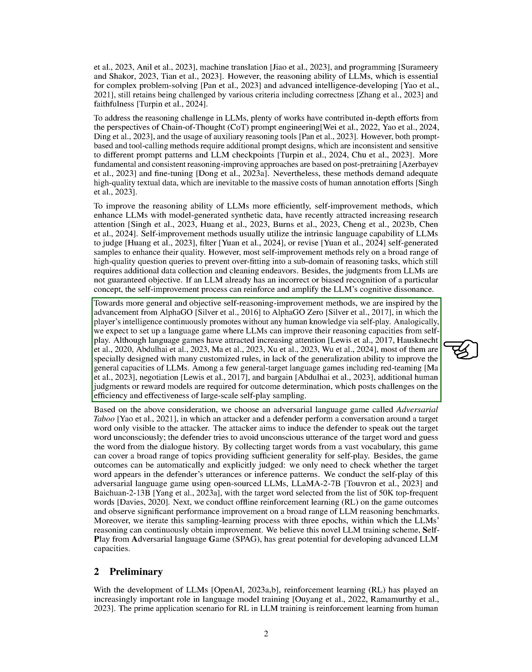To address these issues, we propose a self-reasoning improvement method inspired by AlphaGo Zero, where LLMs can enhance their reasoning through self-play. We introduce an adversarial language game called adversarial taboo, where an attacker tries to make the defender say a target word without them realizing it. By playing this game with different target words, we can improve LLM reasoning across various topics.